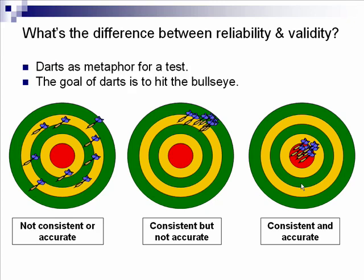Let's take a look at the difference between reliability and validity using the metaphor of darts. Obviously, the goal of darts is to hit the bull's eye. Because reliability is about consistency, if we consistently hit in the same place — regardless of whether we hit the bull's eye — then we have evidence of reliability.